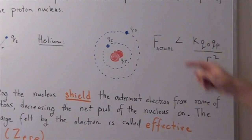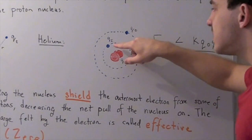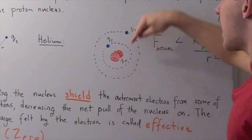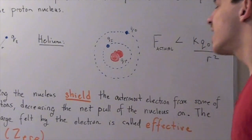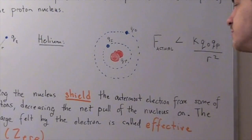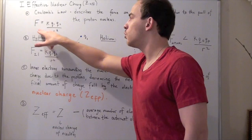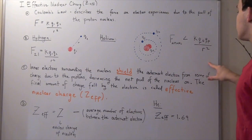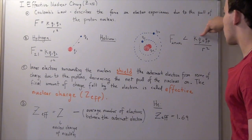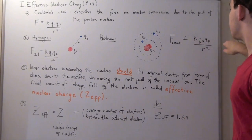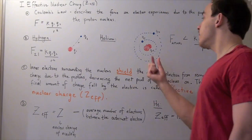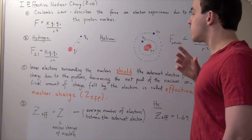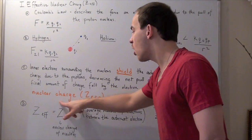The final amount of charge felt by the outermost electron due to the proton nucleus is called the effective nuclear charge. Because there is a second electron found even closer to the nucleus, the charge that the outermost electron feels due to the proton nucleus will be less than what it would feel if that inner electron weren't there. So if we apply Coulomb's law directly using the full proton charge, we'll get a result greater than the actual force that the outermost electron feels — because some of that positive charge is dissipated by the inner electron, making the final effective nuclear charge less.